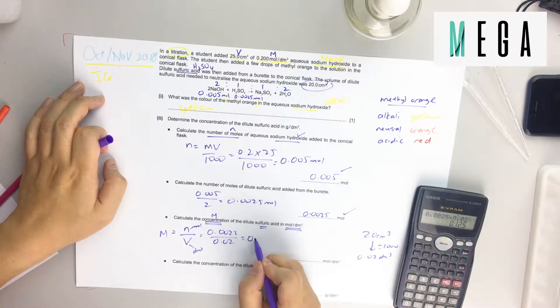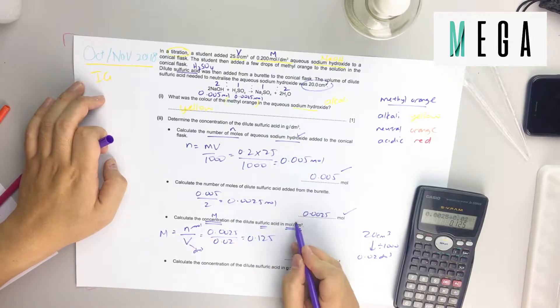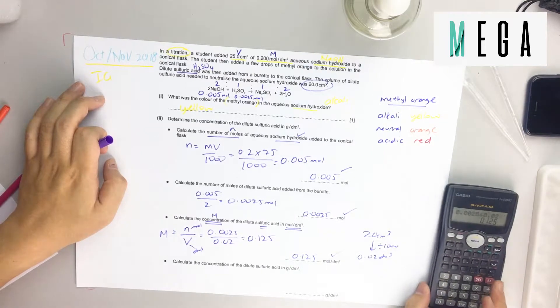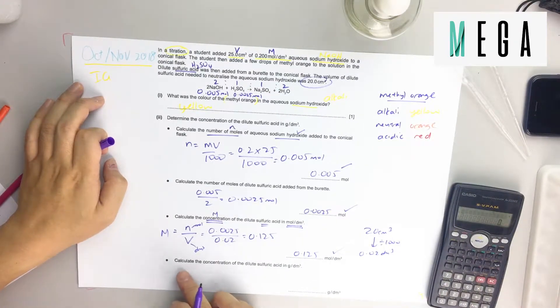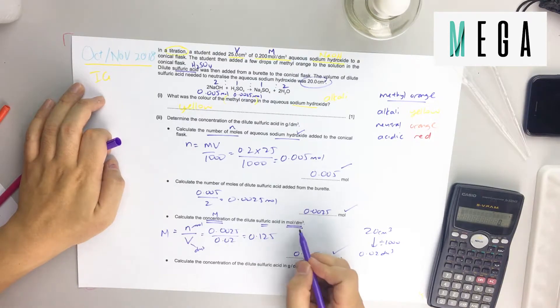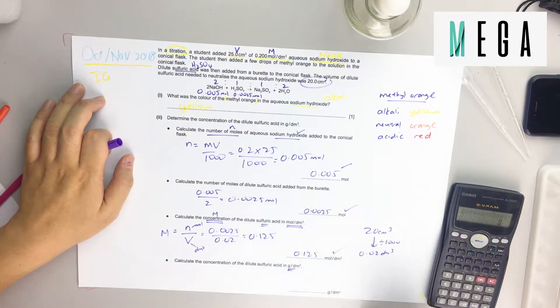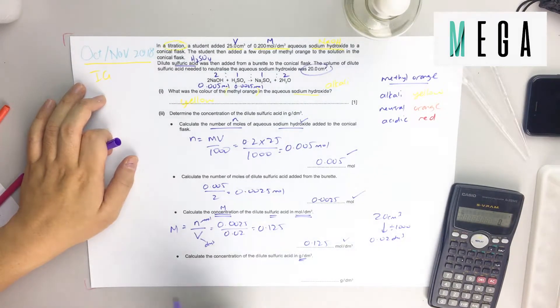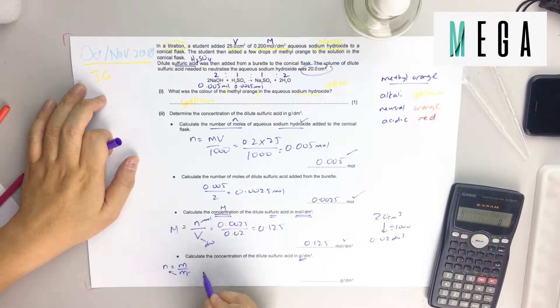You get 0.125 mole per dm³. The last one is more challenging. They want the mole to be in grams. How do you convert mole to gram? The easier way is to find the grams. If you want to find gram, n equals mass over molar mass. Since you want to find this, times it over.